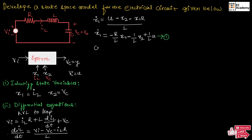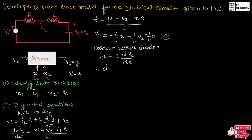Now let us find the current across the capacitor. The current across the capacitor can be given as IL = C·(dVc/dt). Therefore, we can write dVc/dt = IL/C. So we get the expression for differentiation of Vc. Differentiation of Vc is nothing but differentiation of X2. So we can write X2_dot = X1/C, that is, X2_dot = (1/C)·X1. Let us take this as equation number 2.